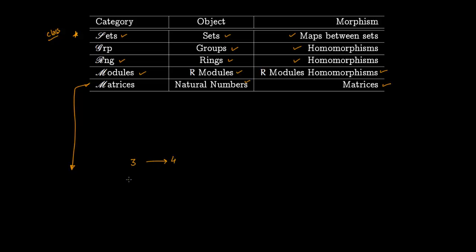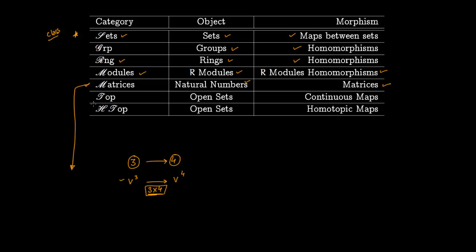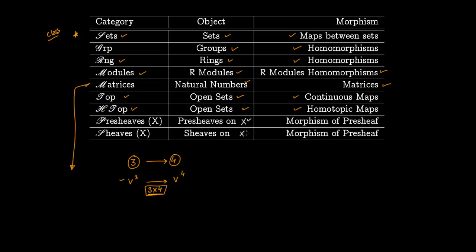We also have the category of Rings (objects: rings, morphisms: ring homomorphisms), the category of R-Modules (objects: R-modules, morphisms: R-module homomorphisms), and the category of Matrices (objects: natural numbers, morphisms: matrices). For instance, a morphism from 3 to 4 corresponds to a 3×4 matrix representing a linear map from V_3 to V_4. Further examples include topological spaces with continuous maps, open sets with homotopic maps (hTop), and pre-sheaves and sheaves on a space X.